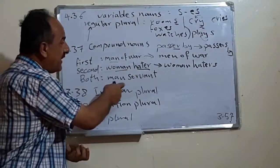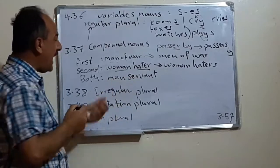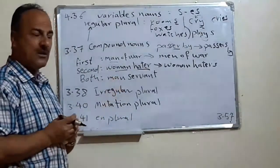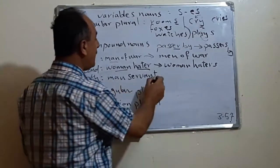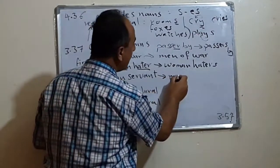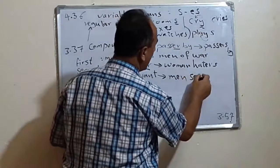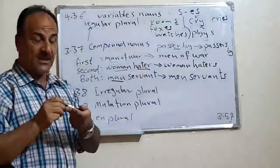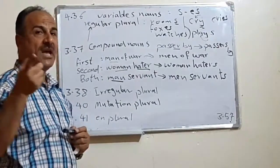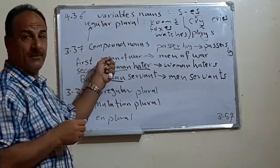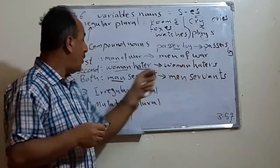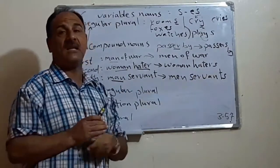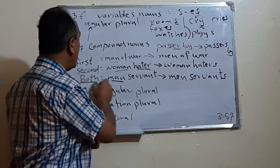Or we change both, the first element and the second one. For example, if we have man-servant or woman-servant, the man who is working as a servant, or the woman who is also working as a servant. We change them both. We say men servants. So we have three categories: either we change the first group, or we change the second element, or we change both elements.